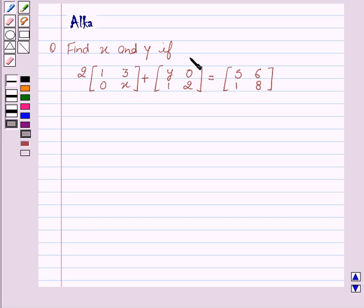find x and y if 2 into matrix [1, 3; 0, x] plus matrix [y, 0; 1, 2] equal to matrix [5, 6; 1, 8].